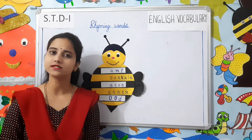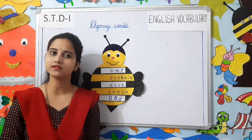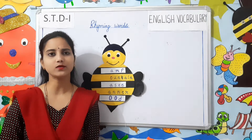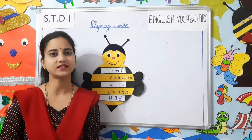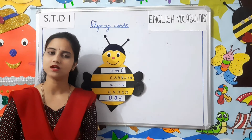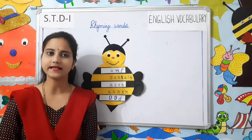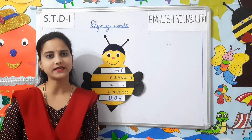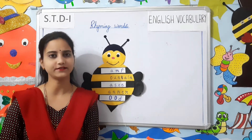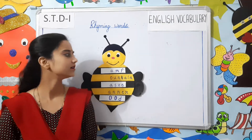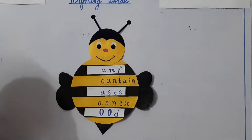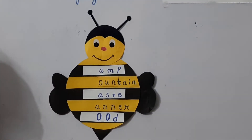What are rhyming words students? Rhyming words are words that have similar ending sound. Their spelling and meaning both are different. For example, look at the board children.